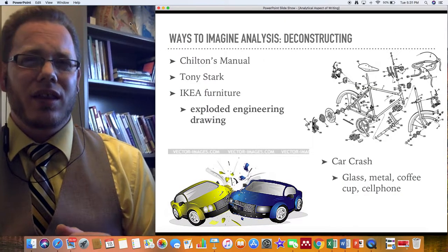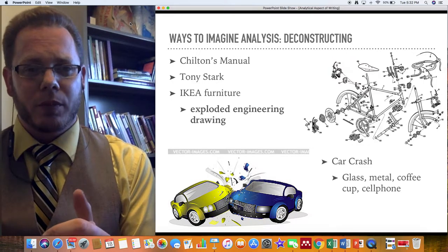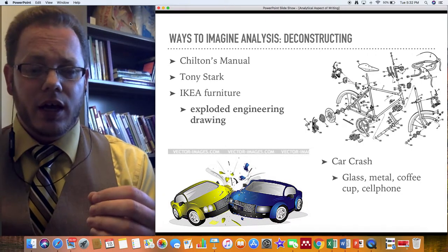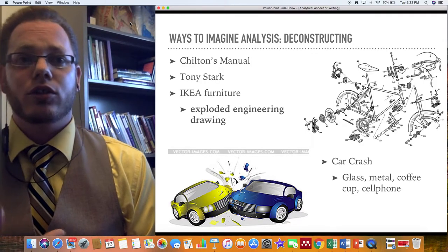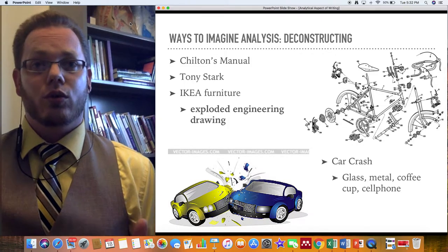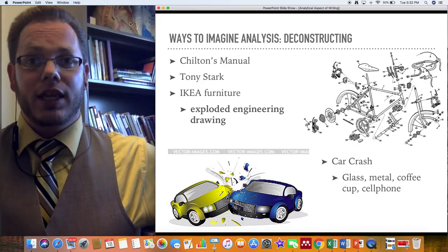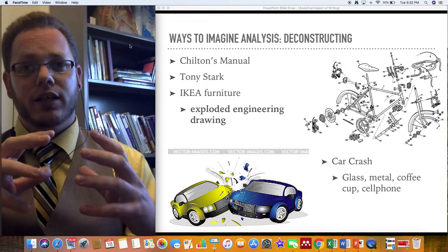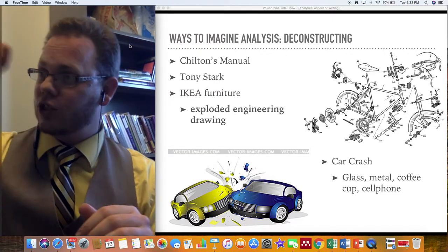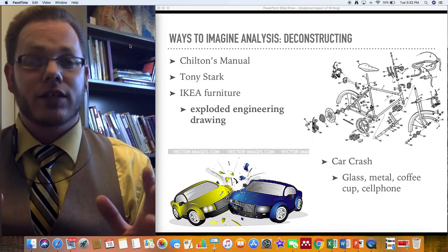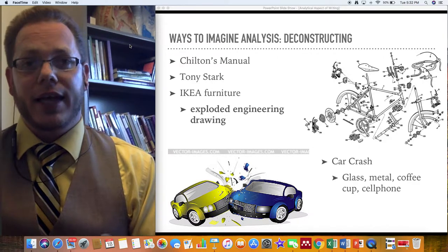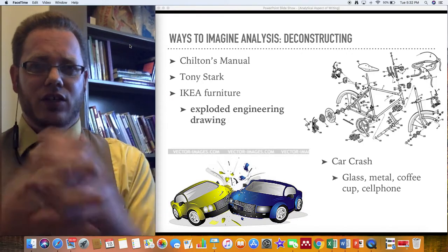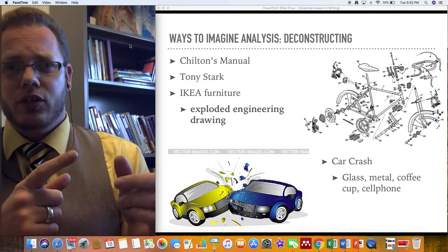To make it practical, if you've ever worked from a Chilton's manual trying to do something in your car, if you've ever put together Ikea furniture, or if you've seen Tony Stark in the Avengers or Iron Man movies where he does that hand spin thing with his hologram inventions and suddenly he's got all the parts separated, you can see them. Essentially what we're looking at is a fully blown out diagram of all the individual parts and pieces that fit into that large composite.